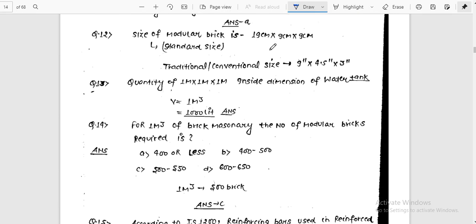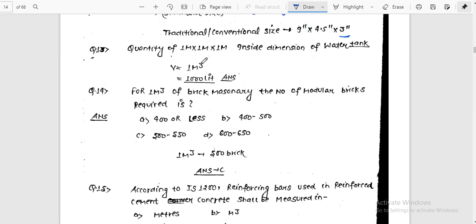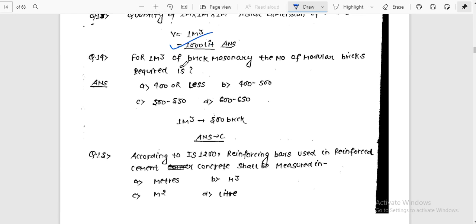The size of modular brick is 19 cm × 9 cm × 9 cm. Traditional and conventional size is 9 inch × 4.5 inch × 3 inch. With mortar, it becomes 20 cm × 10 cm × 10 cm. One meter cube, the inside dimension of a water tank, equals 1000 liters and requires 500 modular bricks.